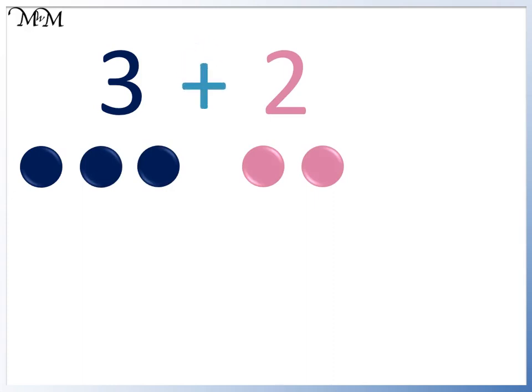The addition sign means to find how many we have all together. We have 1, 2, 3, 4, 5. 3 plus 2 equals 5.